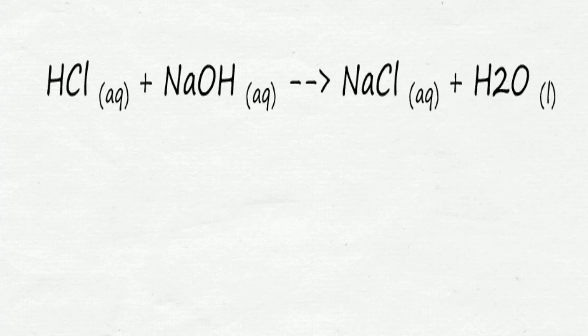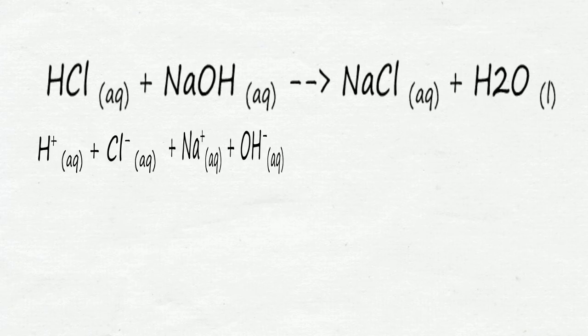Only the substances in aqueous state can be split into ions. Hence, for HCl, we split it into hydrogen ion and chloride ion. For NaOH, into sodium ion and hydroxide ion.